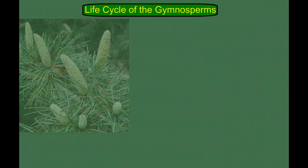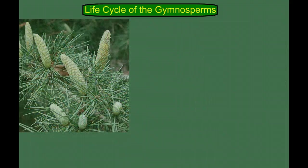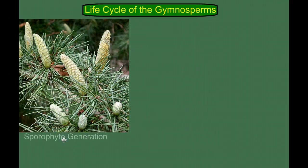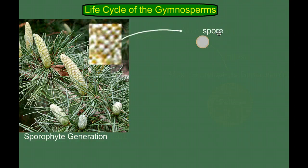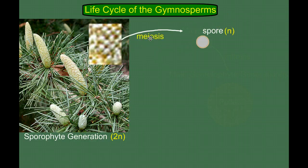Let's look at the male side of things first. Here's a pollen cone. Remembering that this is the sporophyte generation that we're seeing — the diploid generation — and sporophytes make spores. So let's zoom in on part of this pollen cone. This sporophyte is going to make spores, and since the sporophyte is diploid and the spore is haploid, we need meiosis.